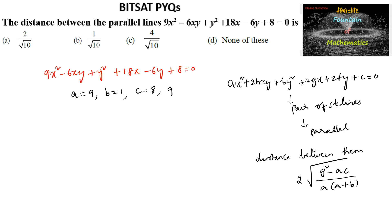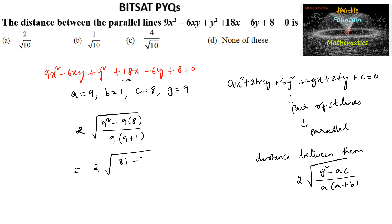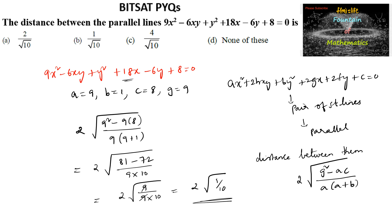Substituting into the formula: 2√(9² − 9×8) / [9(9+1)] = 2√(81 − 72) / [9×10] = 2√9 / 90 = 2√(1/10) = 2/√10. So the answer is option A.